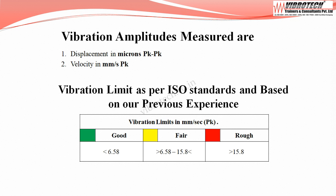As per ISO standard and based on previous experience, the vibration limits are as follows: when velocity falls below 6.58 mm/s peak, it is considered good; between 6.58 and 15.8 mm/s peak is considered fair; and above 15.8 mm/s peak is considered rough.